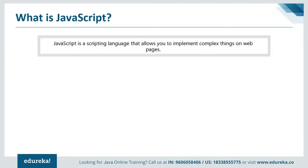Let's get started with our first topic. So what is JavaScript? The first thing that pops into your head is probably that it is Java. Let me tell you that JavaScript has absolutely nothing to do with Java. So why was it named JavaScript? Well, it was sort of a marketing strategy. When JavaScript was first released, it was called Mocha. It was later renamed to LiveScript and then to JavaScript, when Netscape and Sun did a license agreement.